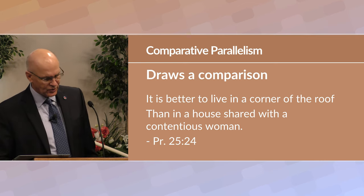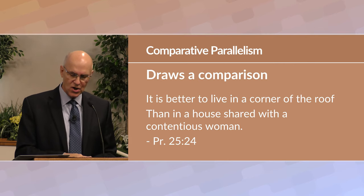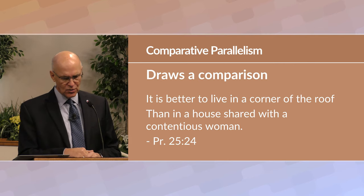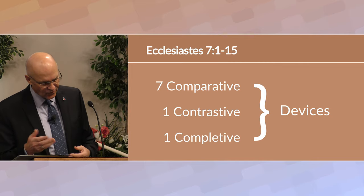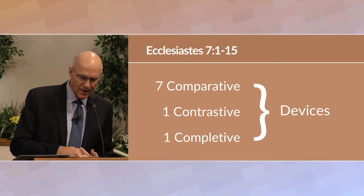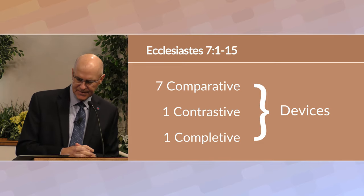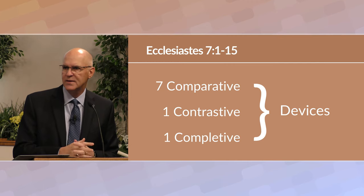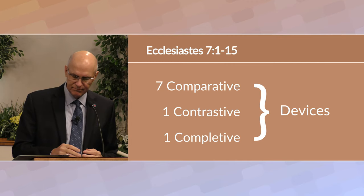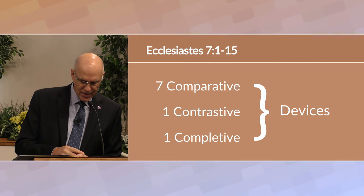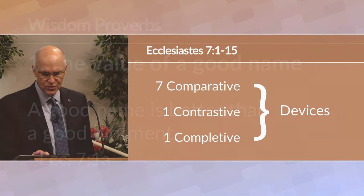In chapter seven, verses 1 to 15, in the discussion of true wisdom, Solomon uses seven comparative, one contrastive in verse four, and one completive in verse seven device. Now that we've had this aside about literary devices, let's go into chapter seven beginning in verse one.